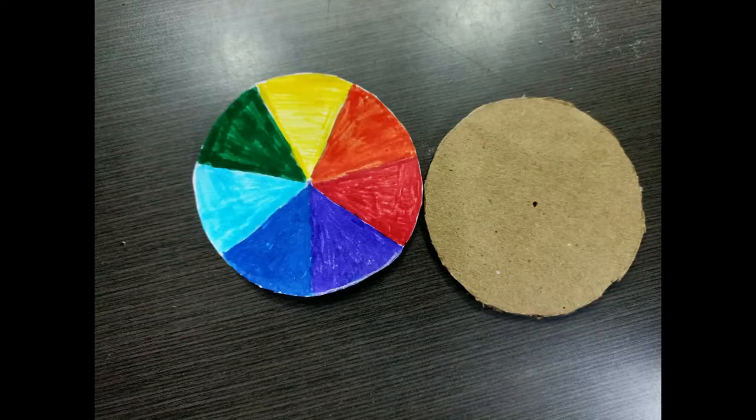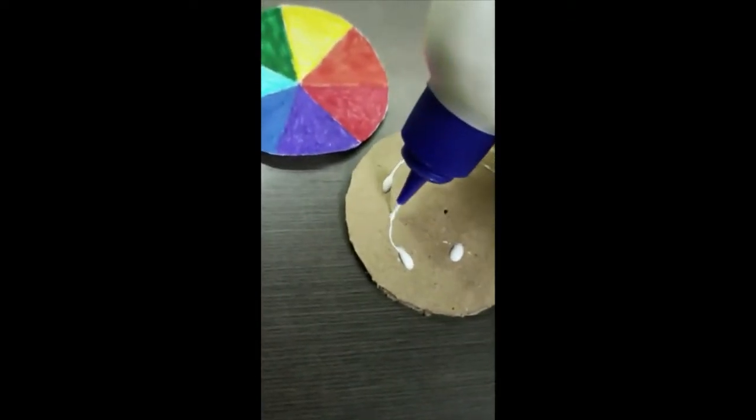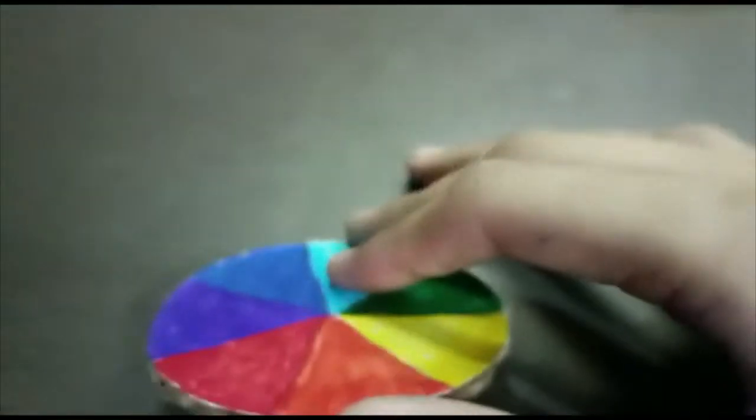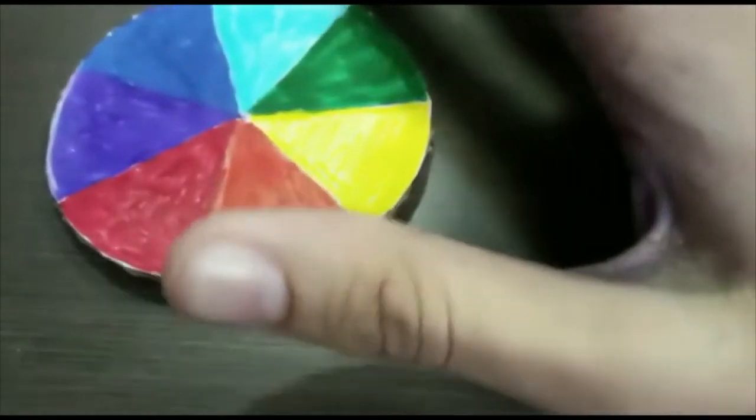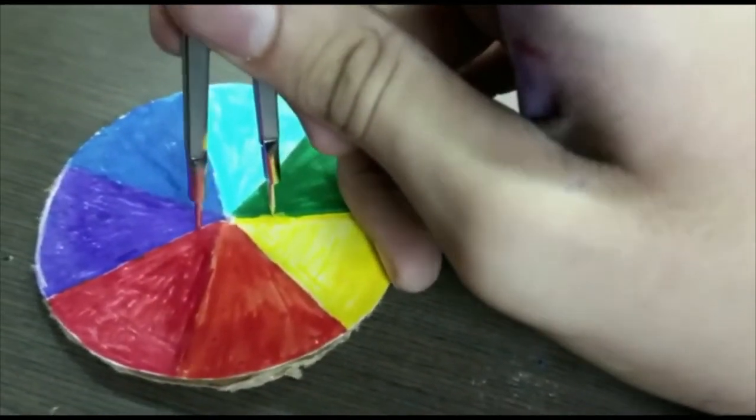Now cut out a cardboard circle of same radius. Now paste the paper circle on the cardboard circle. Now using a divider, make two holes near the center.